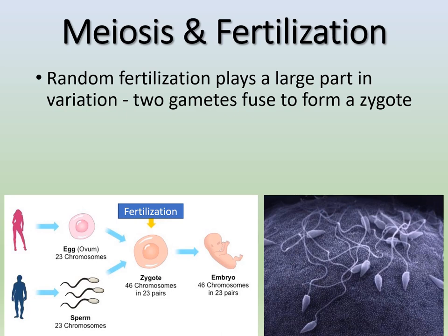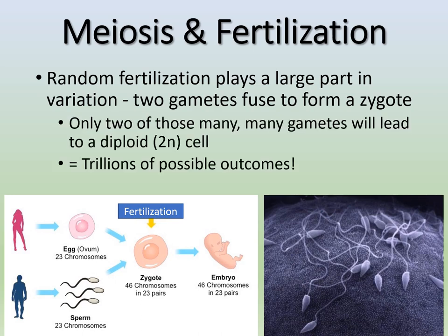Random fertilization plays a huge part in variation. Two of those many different possible gametes lead to a diploid cell or zygote, meaning there are trillions of possible outcomes. It's just random chance — which is why some kids look more like their parents, or have a great blend, or don't look like either parent. It's just random chance, which is amazing to think about.